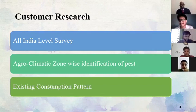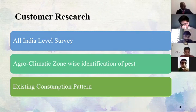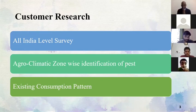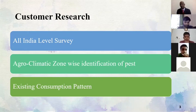Achieving customer excellence basically means putting the customer in the central position of all our activities. For that, we need proper research. An all-India level survey should be carried out to find out what the customer actually wants and what the pain points of the customer are, so that we can address these in our products. Agroclimatic zone-based identification of pests and diseases should be carried out, because the needs and requirements of each agroclimatic zone are drastically different.